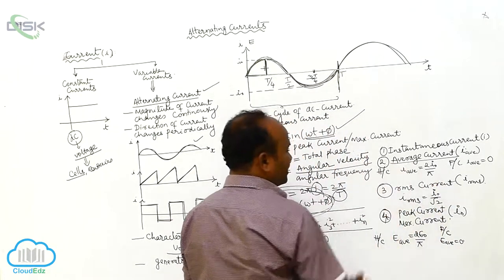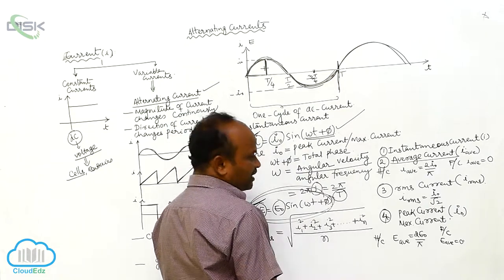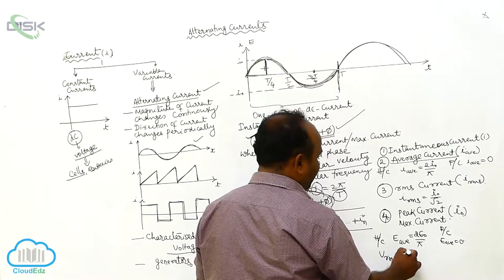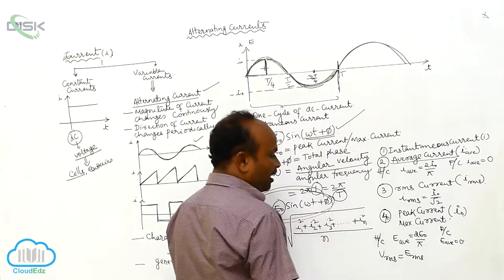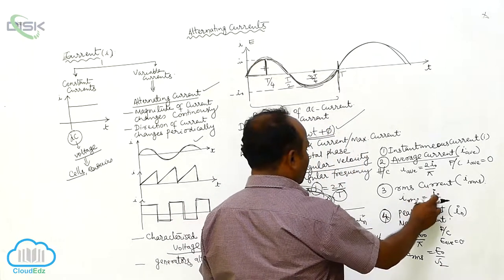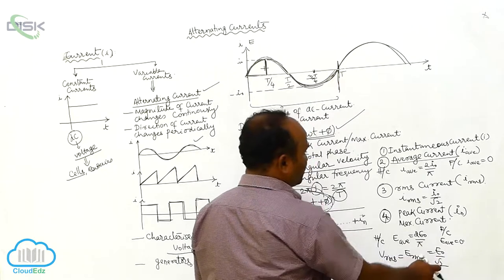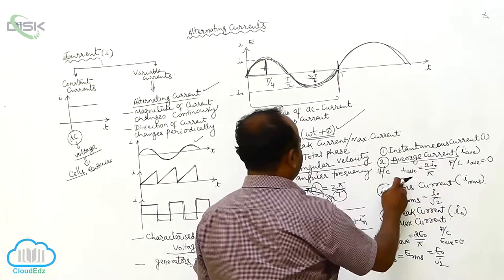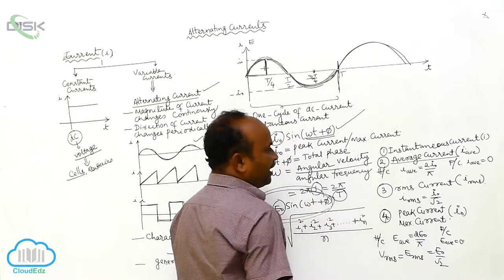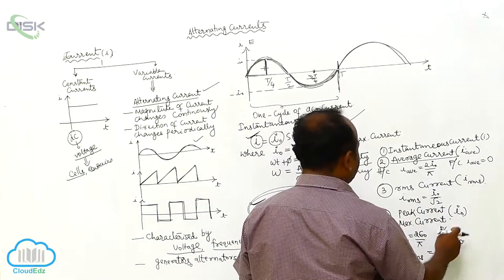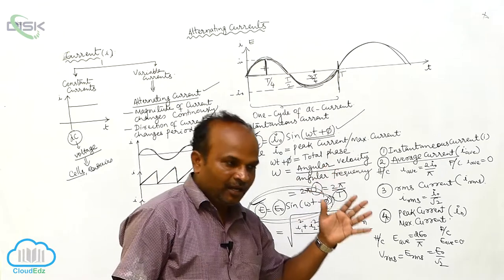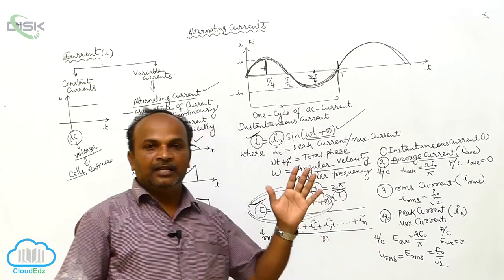Similarly, there is RMS voltage. V_RMS, or E_RMS, is equals to E₀ by root 2. Therefore, I_RMS = I₀/√2 and E_RMS = E₀/√2. Average current in half cycle = 2I₀/π; average EMF in half cycle = 2E₀/π. In full cycle, average current equals 0 and average EMF equals 0. This is called AC current, and this is called AC voltage.